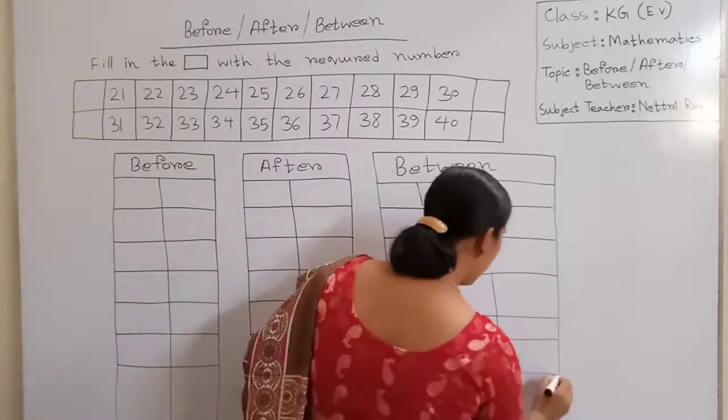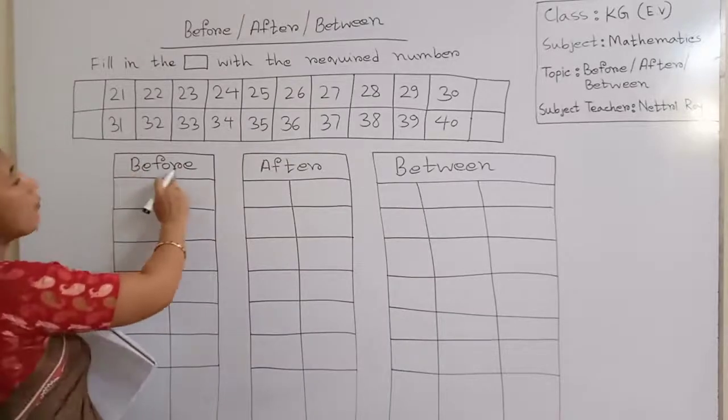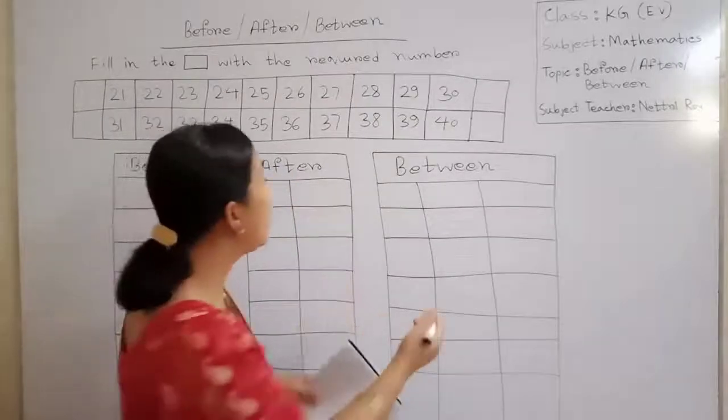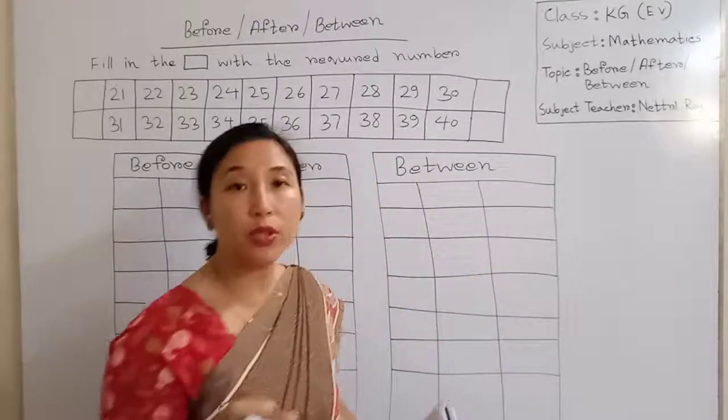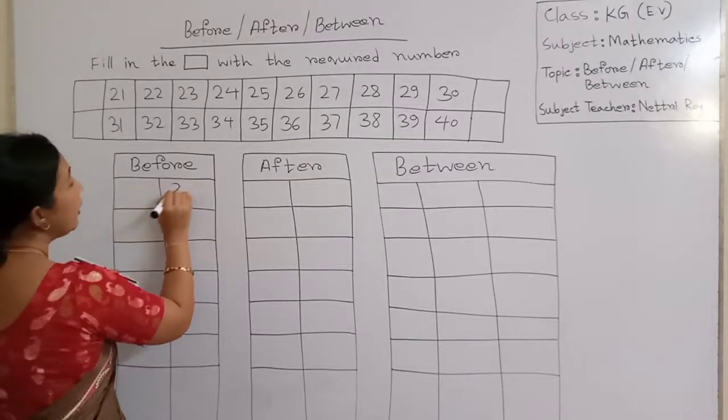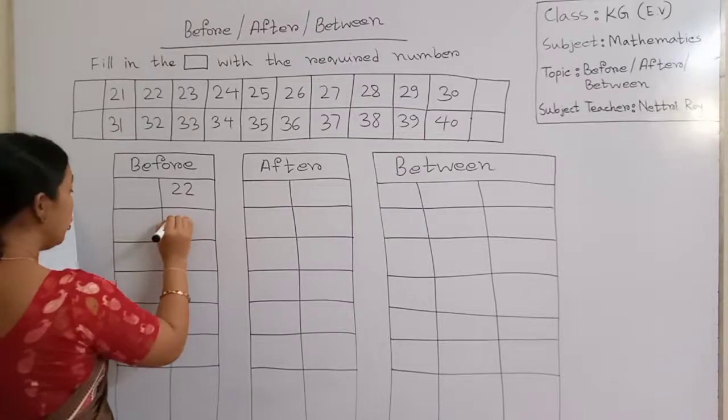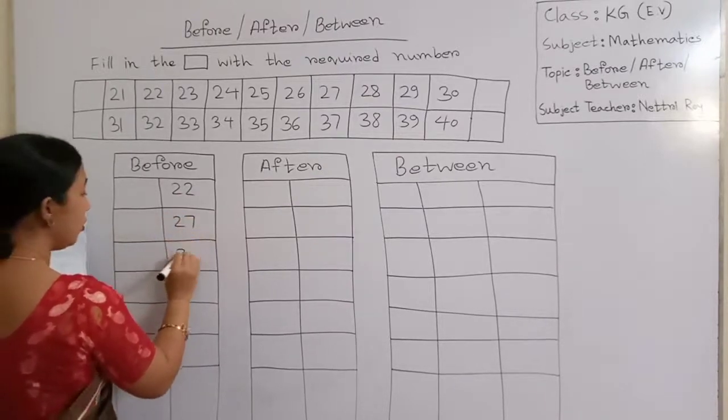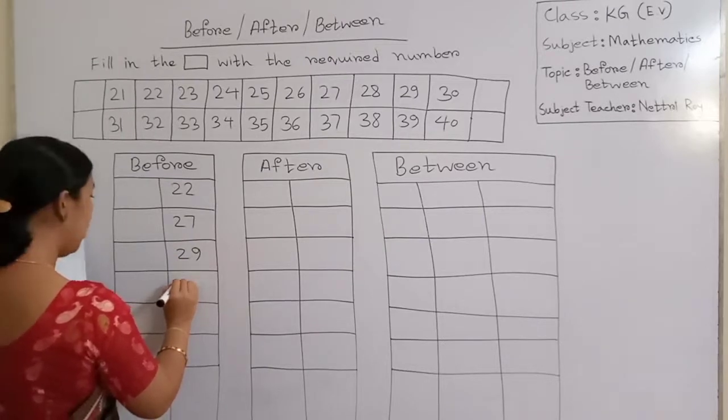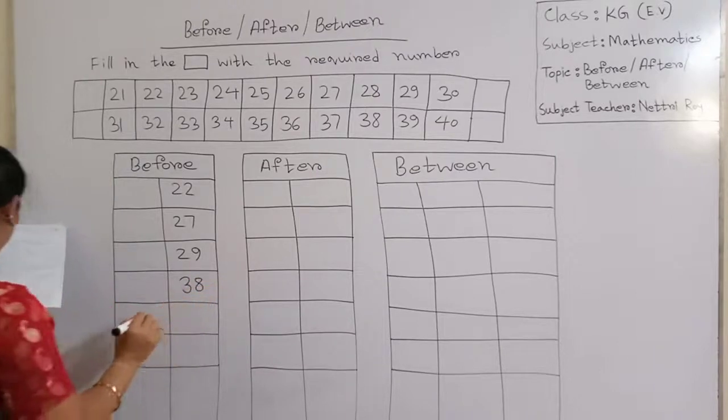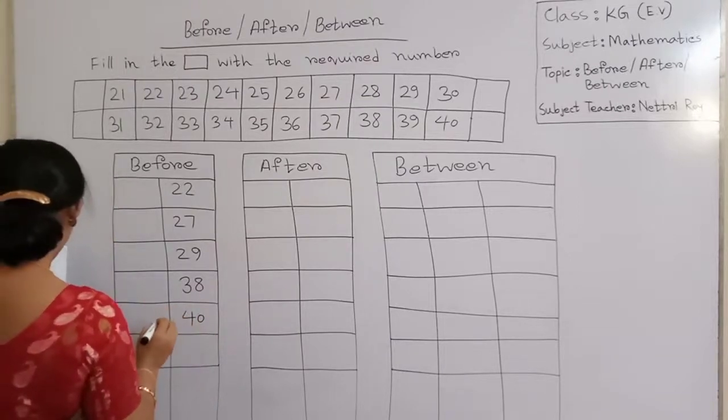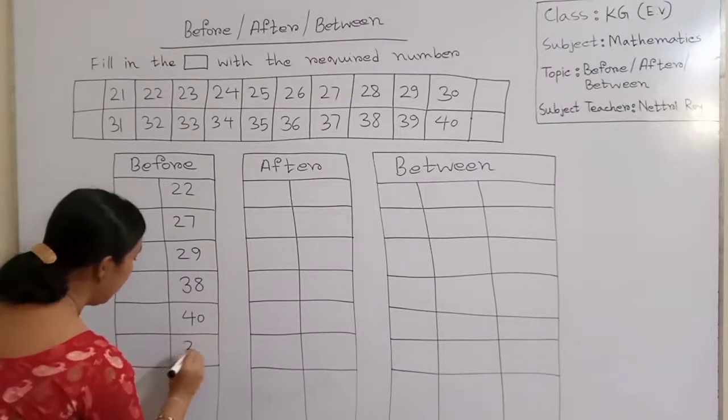Before, after, between. Now let's look at the numbers: 27, 29, 38, 40, 30.